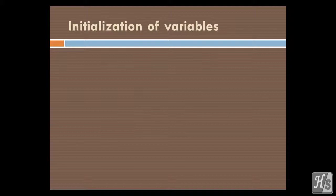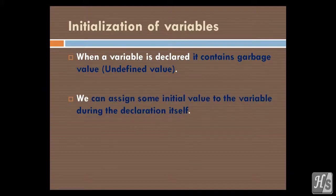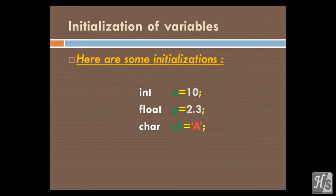Initialization of variables. When a variable is declared it contains garbage value. We can assign some initial value to the variable during the declaration itself. Here are some initializations: variable x equals 10, variable y equals 2.3, and variable ch contains character a.